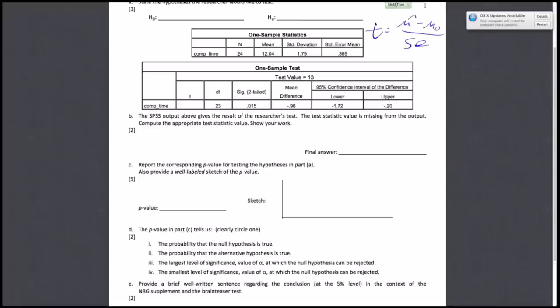Using this formula, mu hat, our observed test statistic, is 12.04. Then subtract the null hypothesis parameter mu naught, which is 13, and divide by the standard error. Use the standard error, which is 0.365, not the standard deviation. You have to use the standard error.